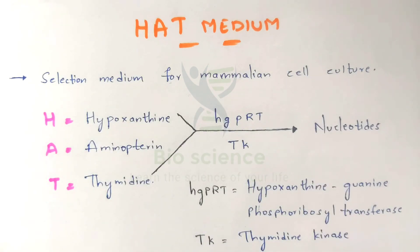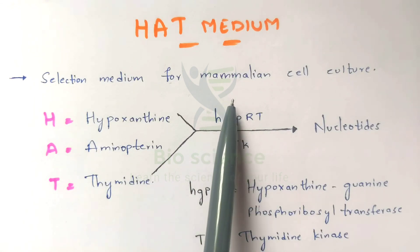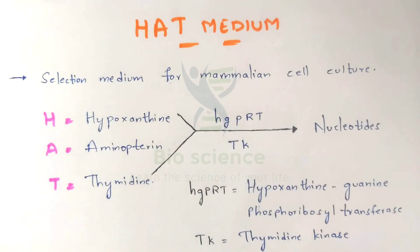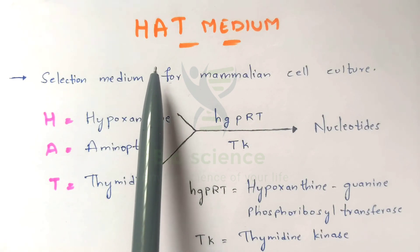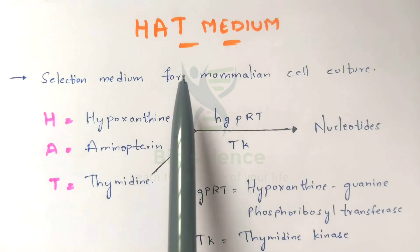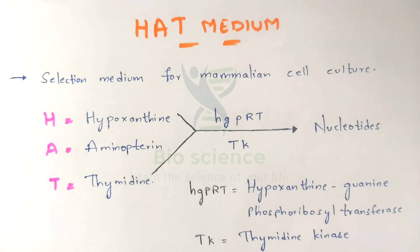HAT medium is mainly used as a selection medium for mammalian cell culture. You take two mammalian cells, expose them to Polyethylene Glycol for fusion, obtain five types of cells, and expose them to HAT medium — where all cells except the hybrid cell are destroyed. This is how HAT medium is used. I hope this information was clear and useful. Thank you for watching — subscribe to the channel, press the bell icon, and comment any doubts below.